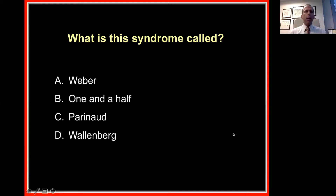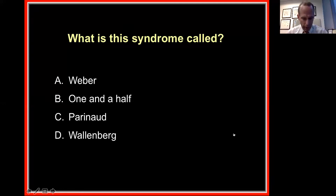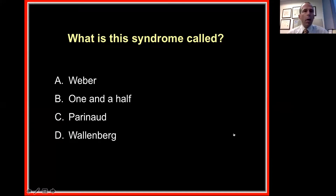You can vote with your keyboards and laptops. What do you think this is called? Is this a Weber syndrome, a one-and-a-half syndrome, Parinaud syndrome, or Wallenberg syndrome? The majority of people — a little more than half — said this is a one-and-a-half syndrome, and the majority is correct.